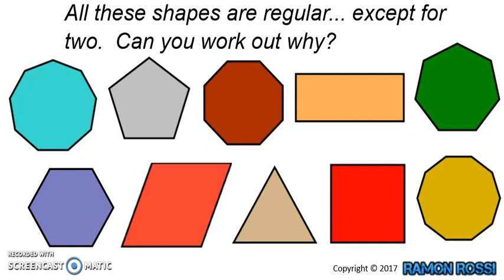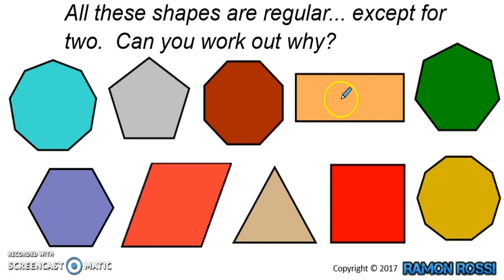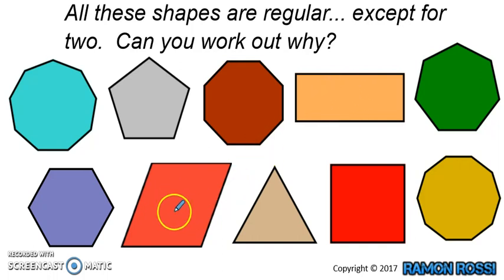Maybe you've worked them out. The ones that are irregular are this one — the rectangle — and this one — the rhombus. But why?